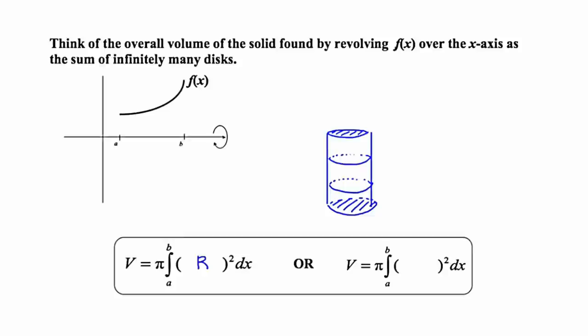Now the problem is that the radius is not fixed over time for anything other than a cylinder. When we look at the cylinder, the radius continues to be the same measurement each time. That's not going to be the case for what we're looking at. Think of the overall volume of the solid formed by revolving f(x) over the x-axis as the sum of infinitely many disks. The first thing I'm going to do is draw that function as it is spun about the x-axis, and then I'm going to start to draw my disks.